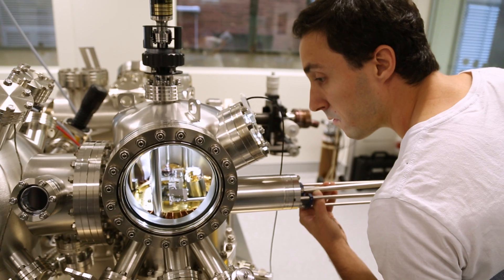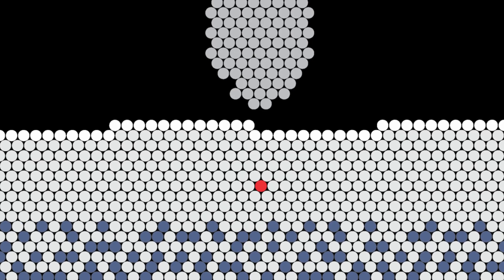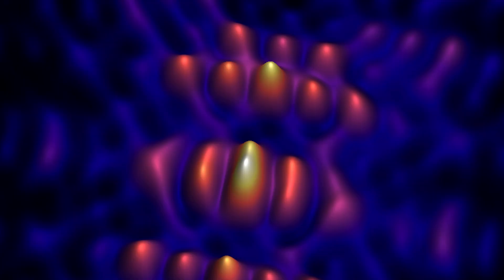We developed a technique based on scanning tunneling microscopy at low temperature to image with high resolution a phosphorus qubit inside the silicon lattice.